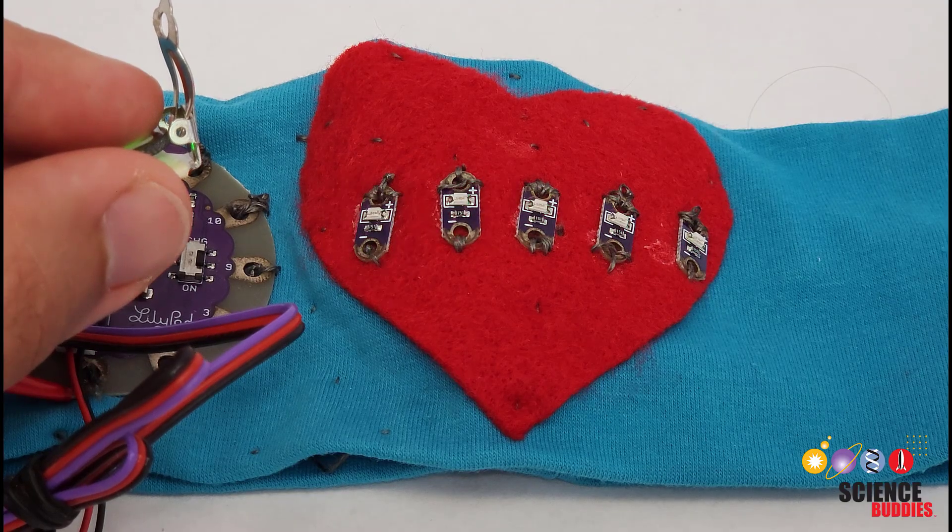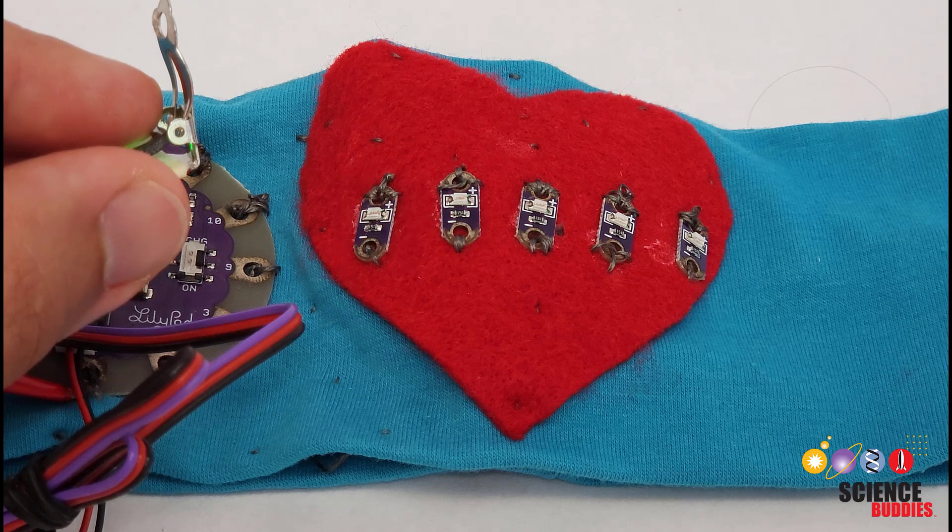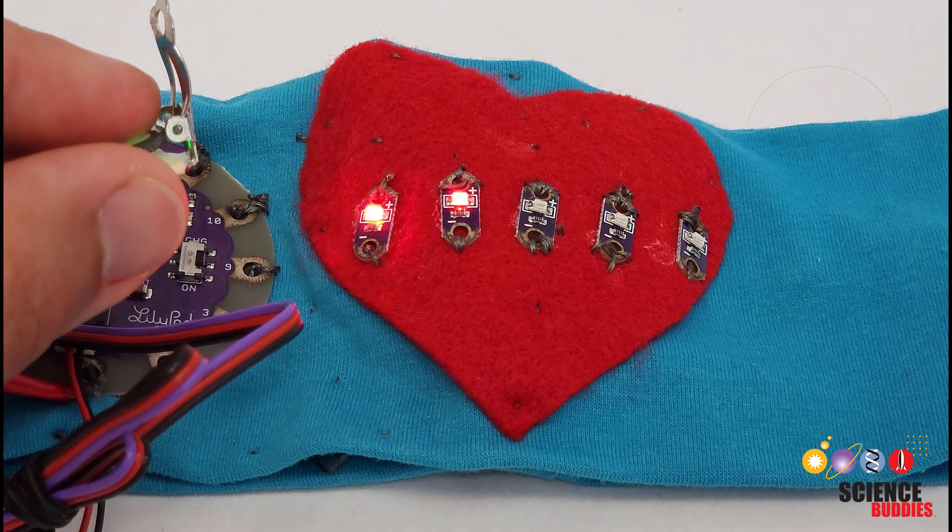Code running on the Arduino then uses the amount of reflected light to determine how many of these five LEDs to light up, resulting in this pulsing heartbeat animation.